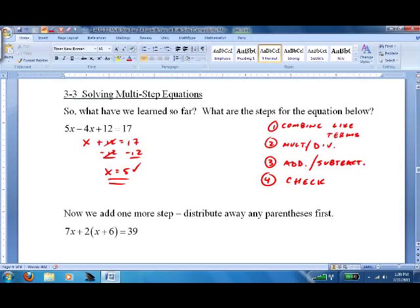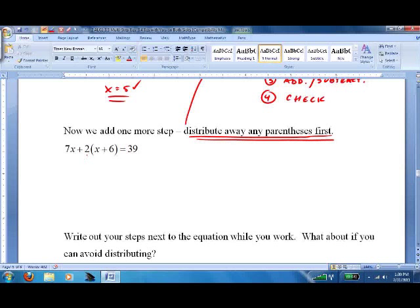So let's add a step, and that's distribute away any parentheses first, which applies most of the time, but not always. So that would go right here. So let's distribute away parentheses. 7x plus 2x plus 12 equals 39. And we're back where we started.